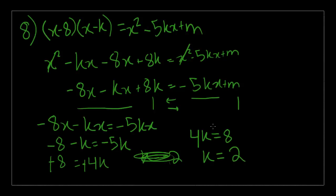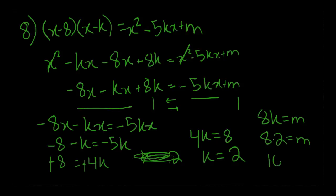Now let's go back to the other equation we formed: 8k equals m. We know k equals 2, so 8 times 2 equals m. Therefore, 16 equals m. The question was what is the value of m? That is choice B.